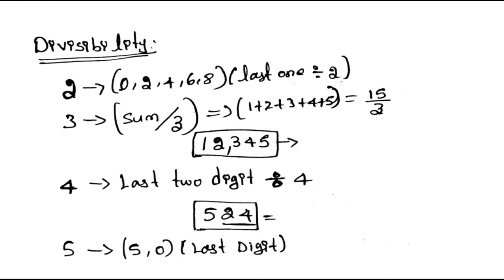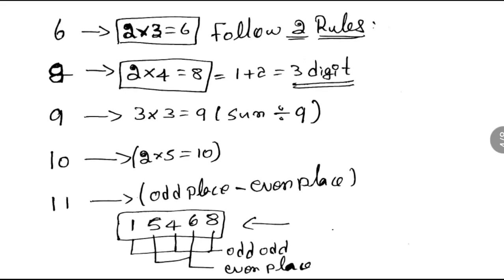For divisibility by 6, you can use 2 rules: rule 2 and rule 3. Last digit must be 0, 2, 4, 6, or 8 for rule 2. Then you add the digits and check divisibility by 3. If both rules apply, then the number is divisible by 6.